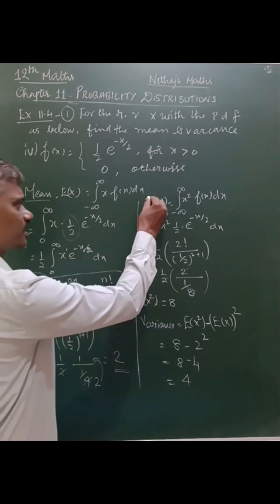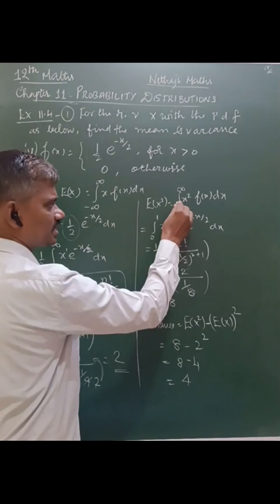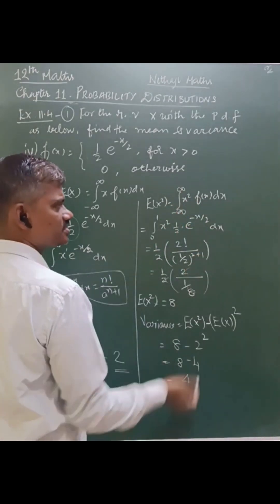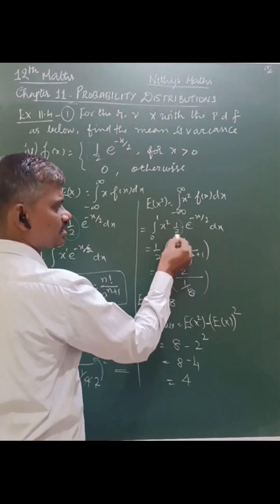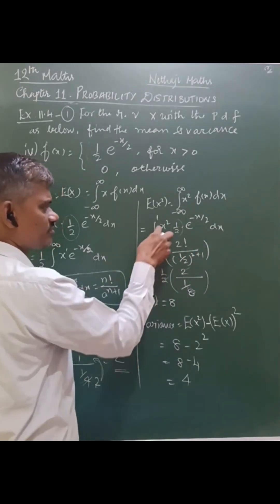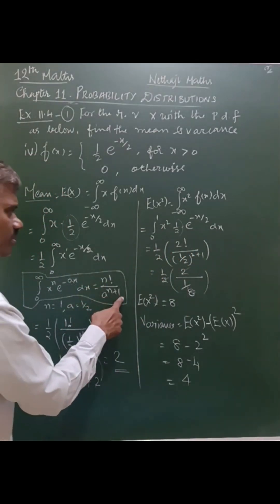Next comes E(x squared). E(x squared) is integral minus infinity plus infinity x squared into f(x) dx, which is x squared into one-half into e power minus x by 2 into dx. Again, it is the same formula, n factorial by a power n plus 1.